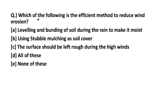Moving to the next question: which of the following is the efficient method to reduce wind erosion? Wind erosion occurs when wind flows and erodes the soil. The first option is leveling and bundling of soil during rain to make it moist — this moisture control method makes soil less prone to wind erosion, so plowing during the rainy season or water harvesting helps avoid wind erosion. This is a correct statement.